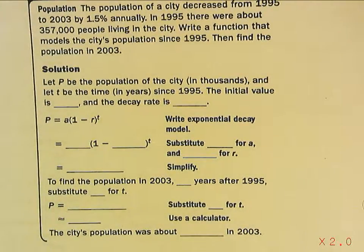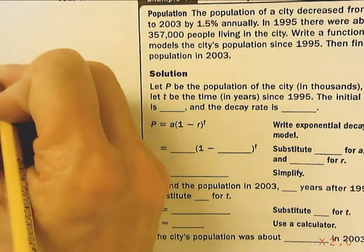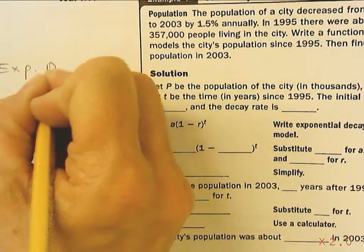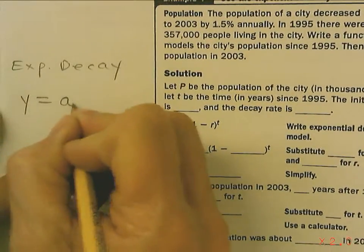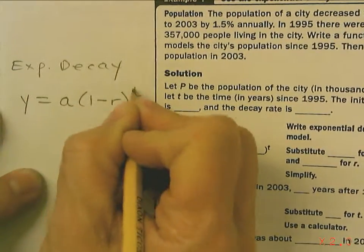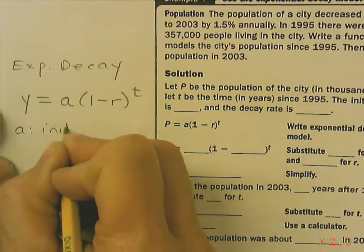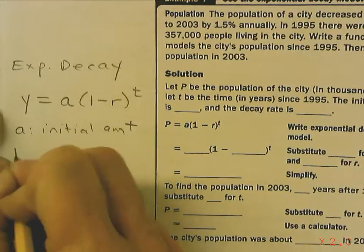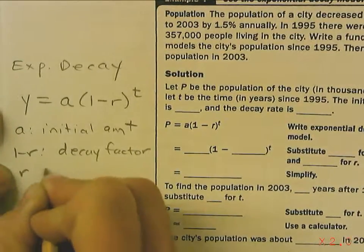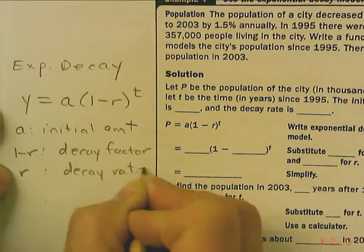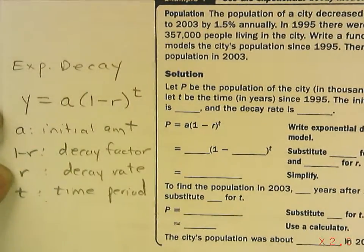Now, you need to know exponential decay. This is the equation y equals a times 1 minus r to the t, where a is your initial amount, 1 minus r is called your decay factor, r is the decay rate, and t is the time period. That's exponential decay.